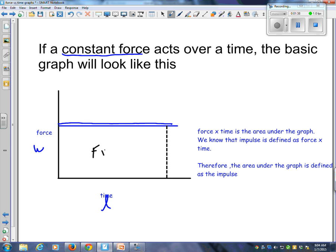Force multiplied by time would give you the area, and we already know that impulse is defined as force multiplied by time. Therefore, using this logic, the area under a graph is defined as the impulse. Same reason as the area under a force times distance graph is defined as work.